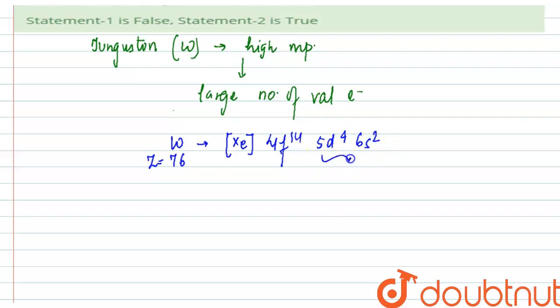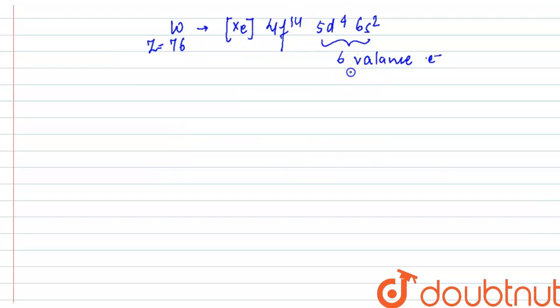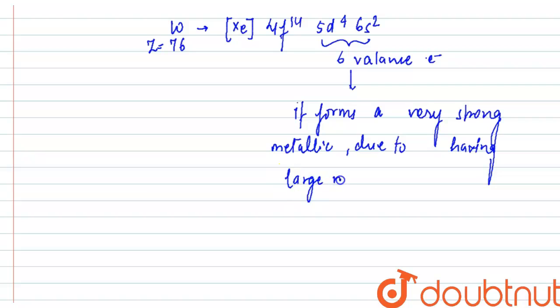Now, it has a total of 6 valence electrons that it can lose. Due to this large number of valence electrons, it forms very strong metallic bonding. So it forms very strong metallic bonding due to having a large number of valence electrons.